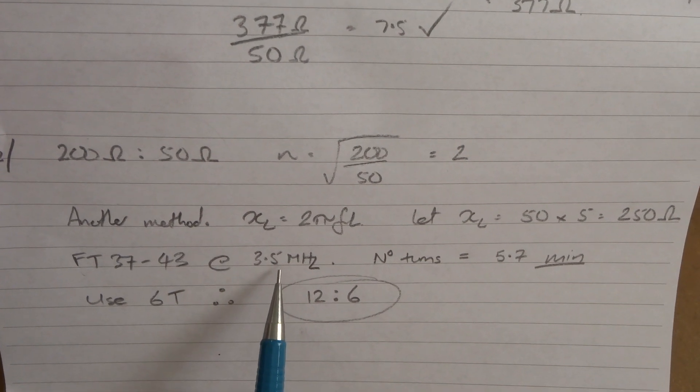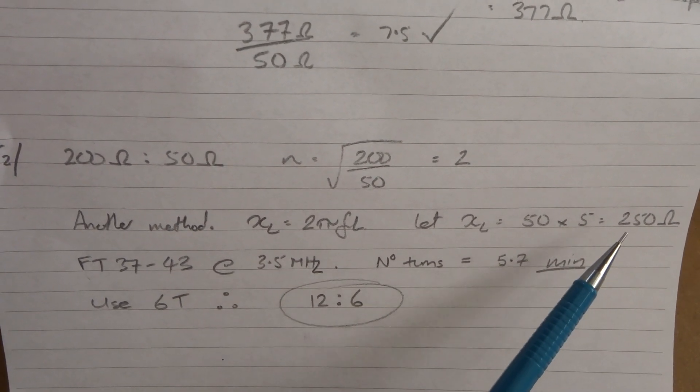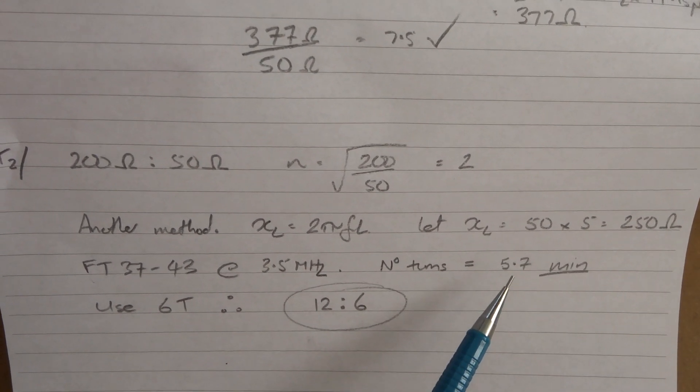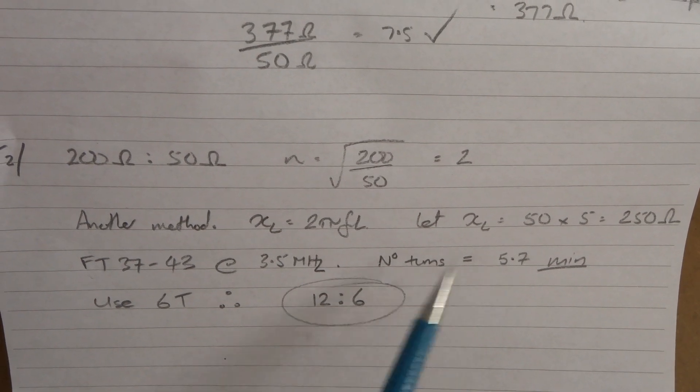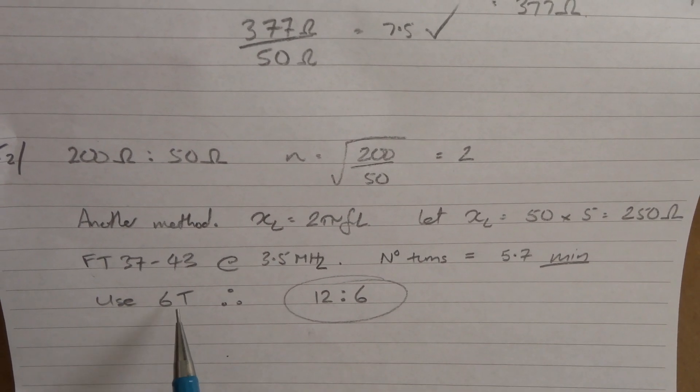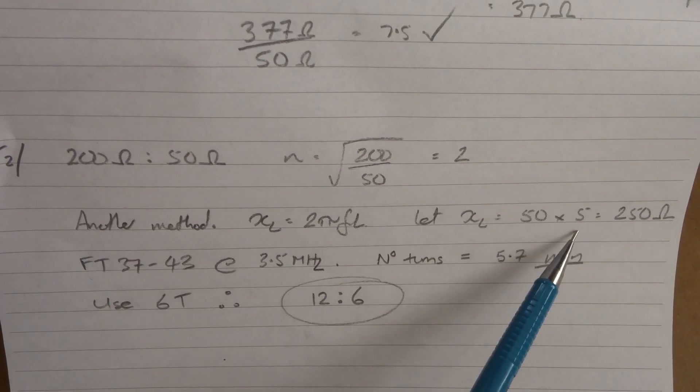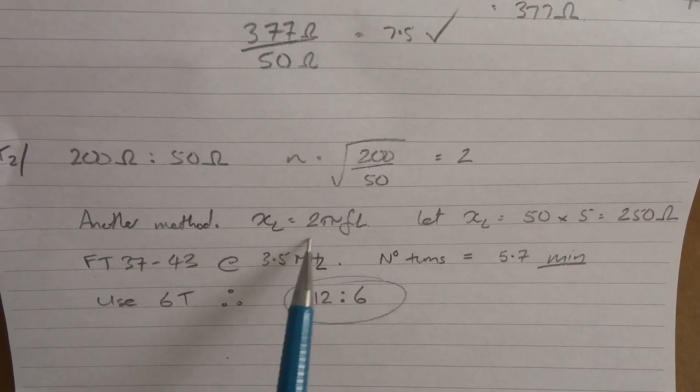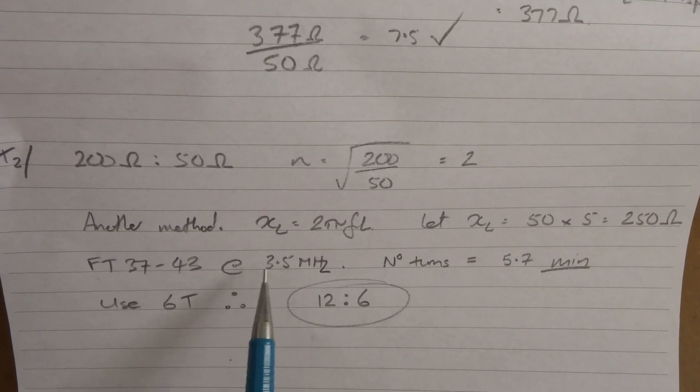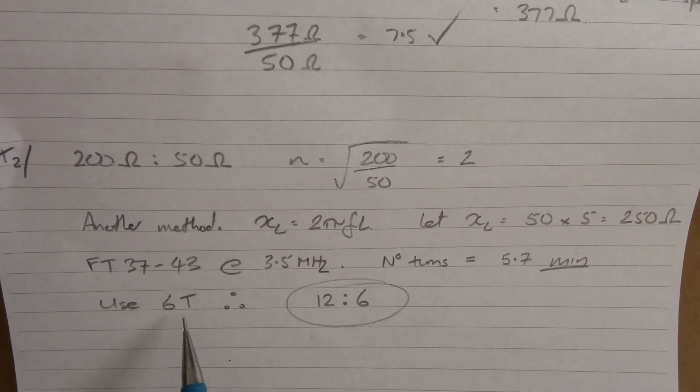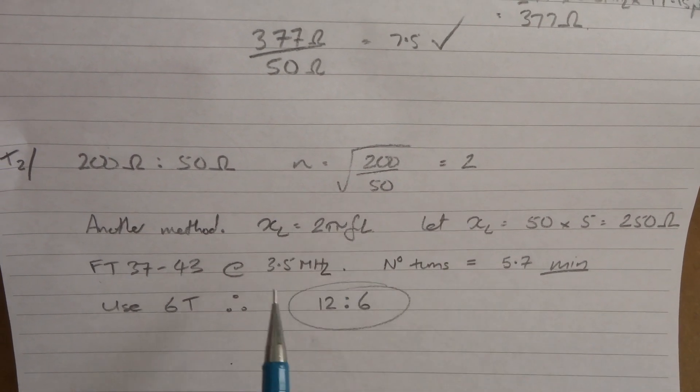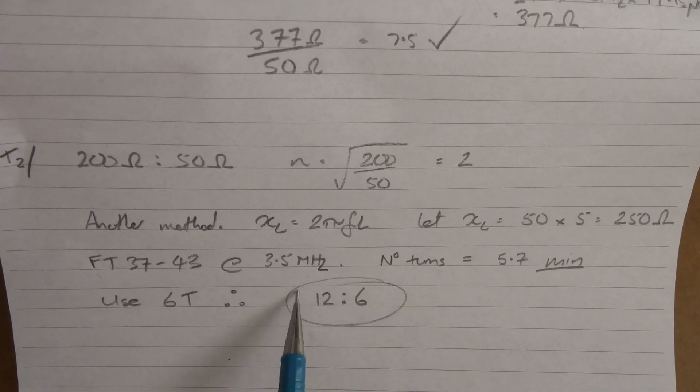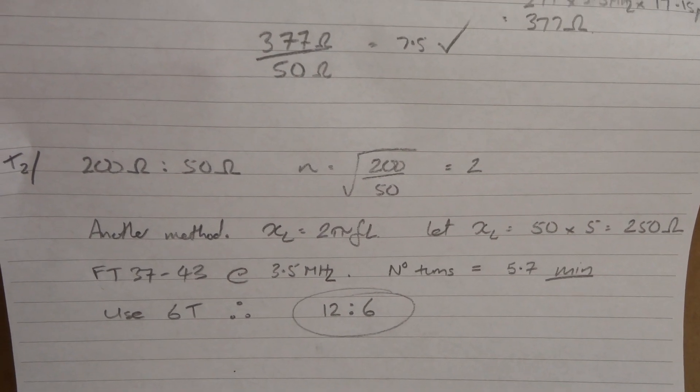Using an FT37-43 at 3.5 MHz, if I want an inductive reactance of that, I need turns of 5.7. You can't have 5.7 turns, so let's crank that up to 6. So I need a minimum of 6 turns to meet that criteria of at least 250 ohms inductive reactance at 3.5 MHz. If that's 6 and our turns ratio needs to be 2, 6 times 2 equals 12. So that's what we've used in the past.